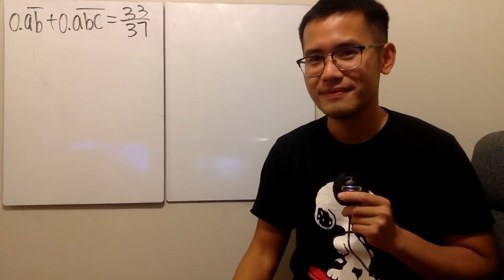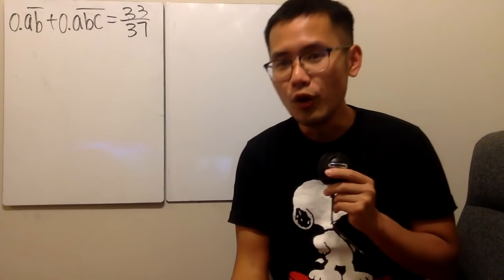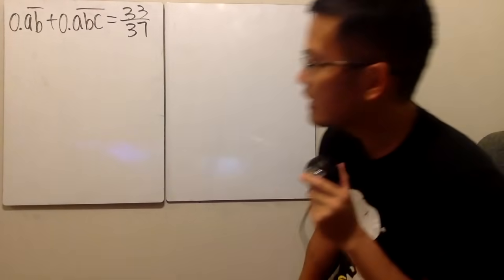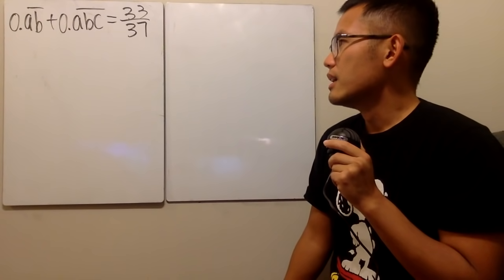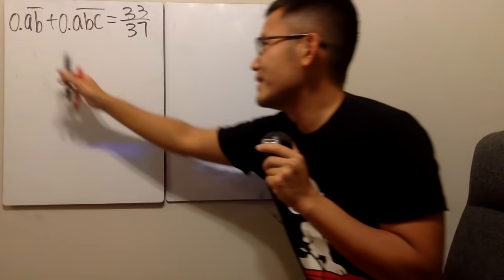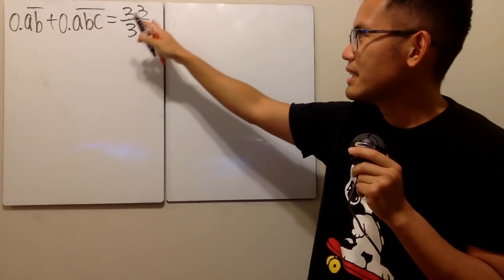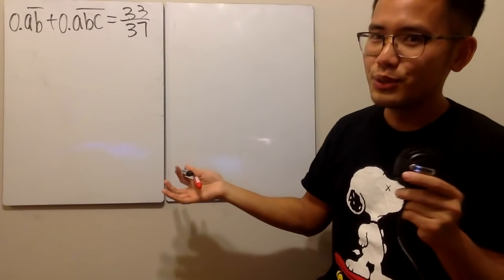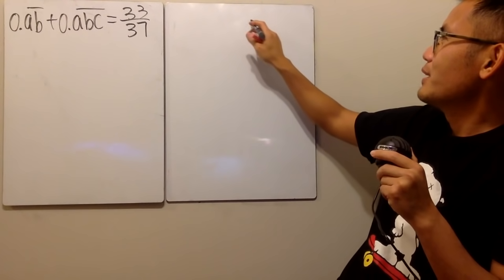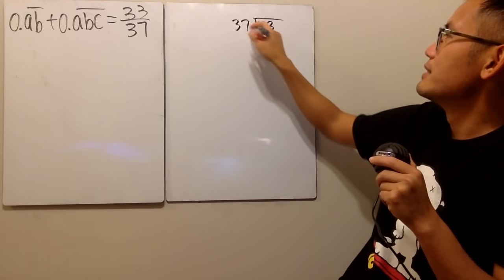Hopefully you got a chance to try it. Now let's figure this out. We are dealing with decimal numbers on the left-hand side. Let's do some division on the right-hand side to see what we get. Let's compute 33 divided by 37.